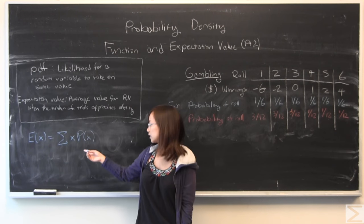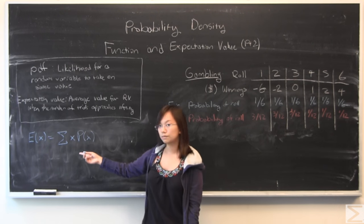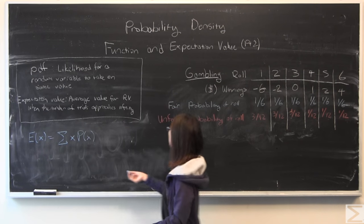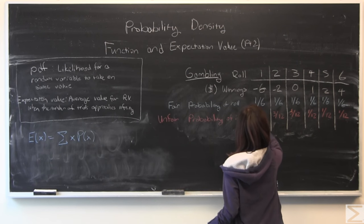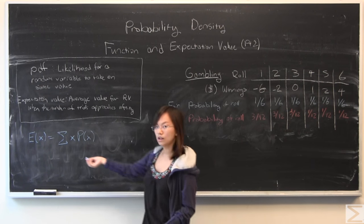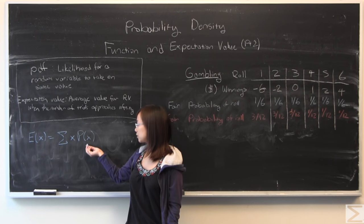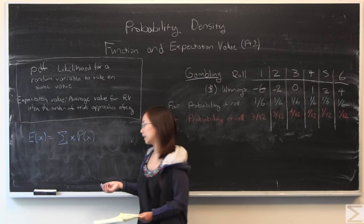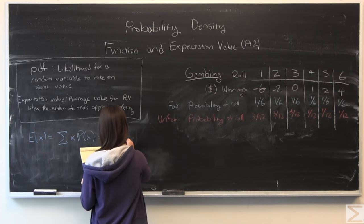I'm going to sum all the possible values of x you can get, where x is going to represent the amount of money you're going to earn, and multiply it by each respective probability of getting that x value, which is going to be 1/6 in this first case.